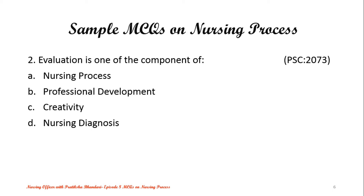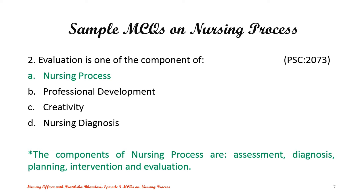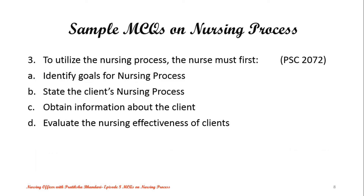Question number 3: To utilize the nursing process, the nurse must first — Option A: Identify goals for nursing process, Option B: State the client's nursing process, Option C: Obtain information about the client, Option D: Evaluate the nursing effectiveness of clients. The correct answer is Option C — obtain information about the client. This means assessment, the first step of the nursing process. We must first obtain information about the client.